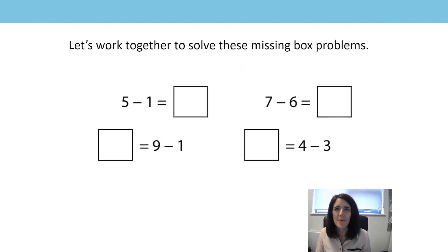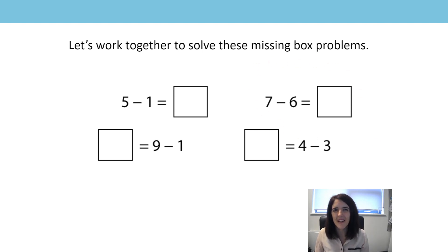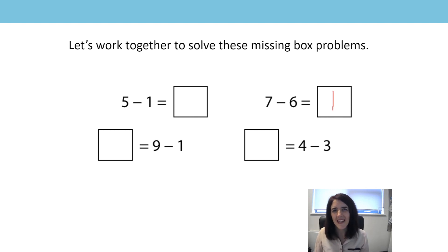Let's work together to solve these missing box problems. Can you spot any consecutive numbers? Seven subtract six equals one. Why does it equal one? Because six is one less than seven, and we know that consecutive numbers have a difference of one.